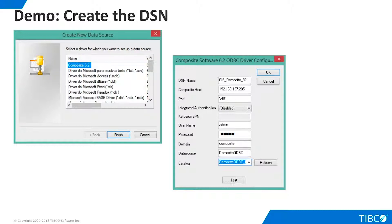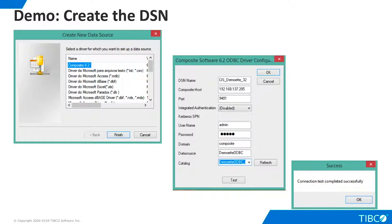Enter the TDV username and password, as well as the user's TDV domain name. Note that our data source name for this demo is demoat-odbc. Click the Refresh button and all catalogs within this data source will be accessible in the drop-down widget. In this case, only one catalog is present. Remember that you should always create a catalog when you publish ODBC accessible resources in TDV. Click the Test button to make sure the connection is successful.